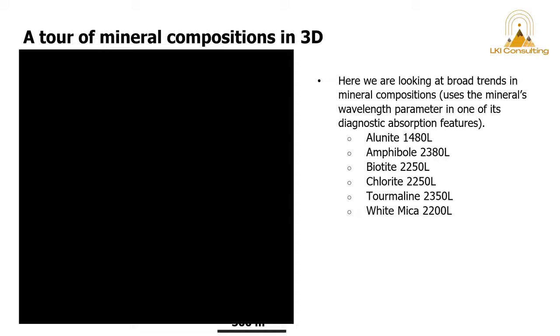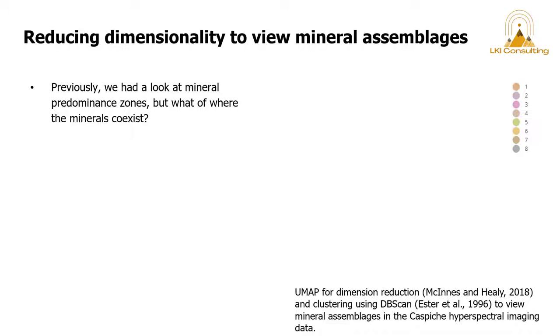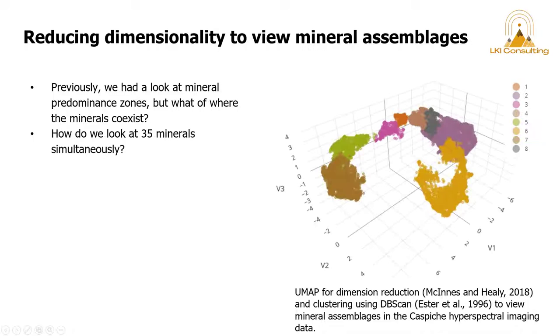And I think what we saw just here in the copper just now is that looking for phengite in the white mica wavelength feature is not always the case for high grade copper zones. So just a few things to think about. Previously we had a look at mineral predominant zones, but what of where all these minerals coexist? So this here on the right is a UMAP for dimension reduction, and then we use clustering using a density-based scan to view the mineral assemblages in the Caspiche hyperspectral imaging data.